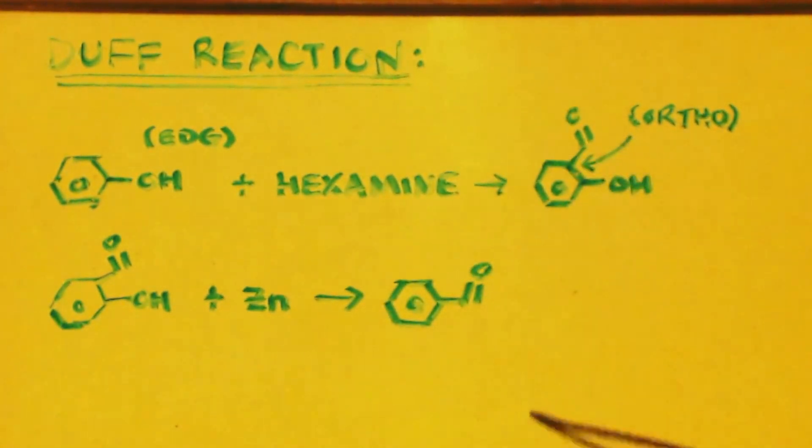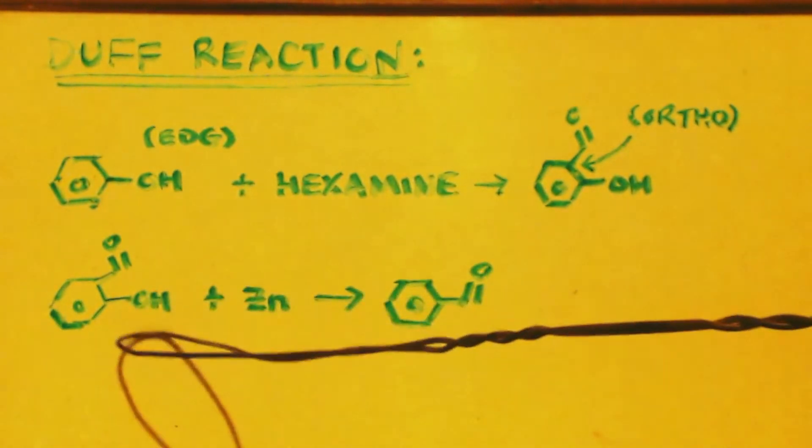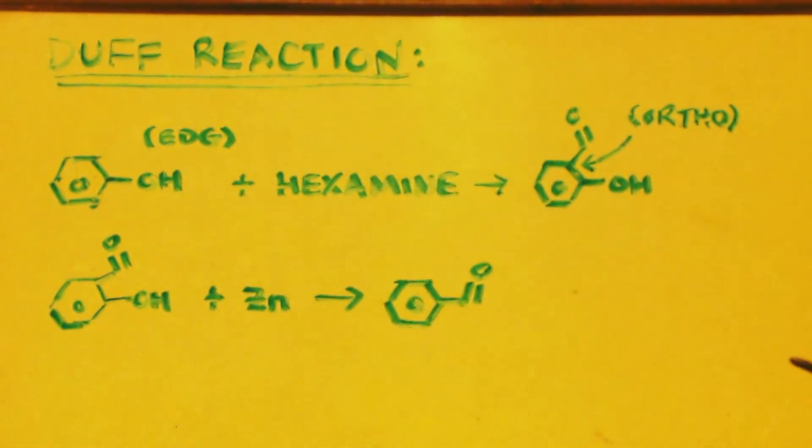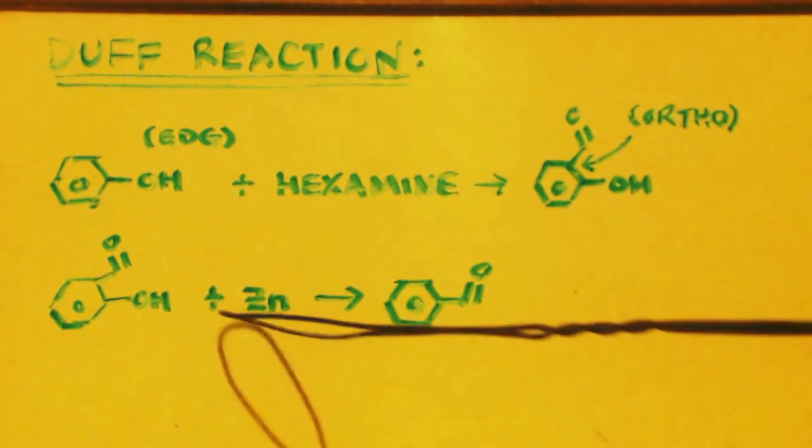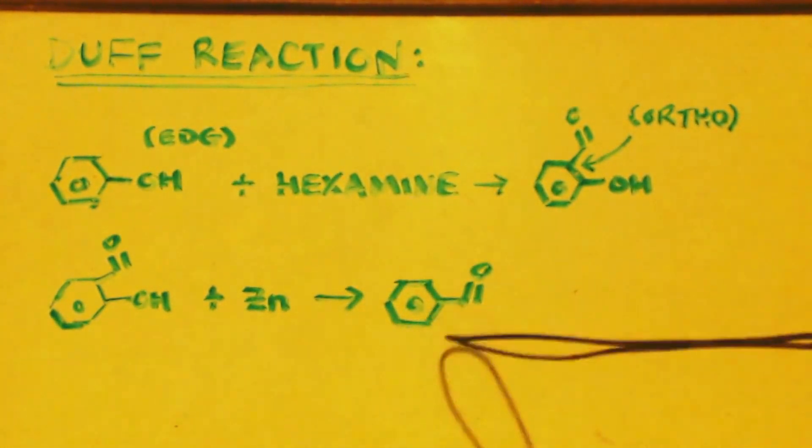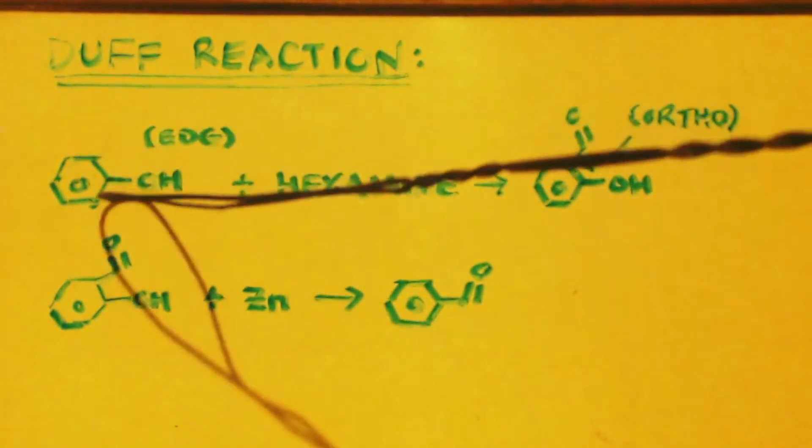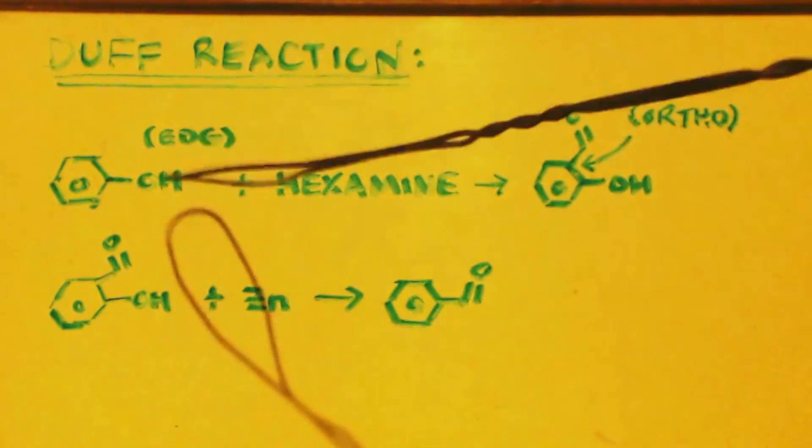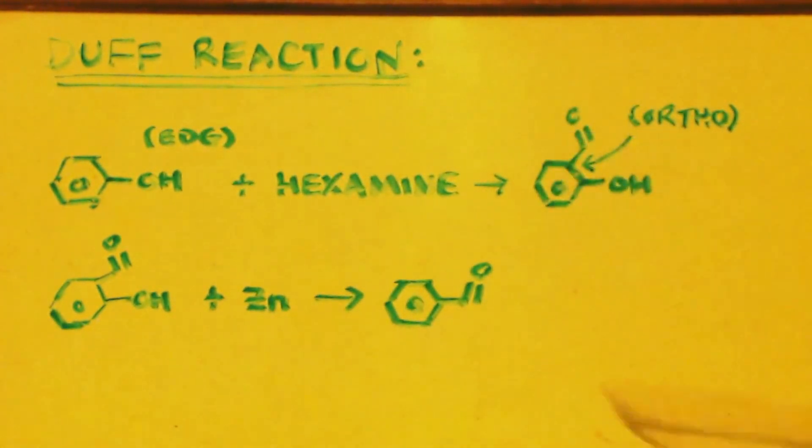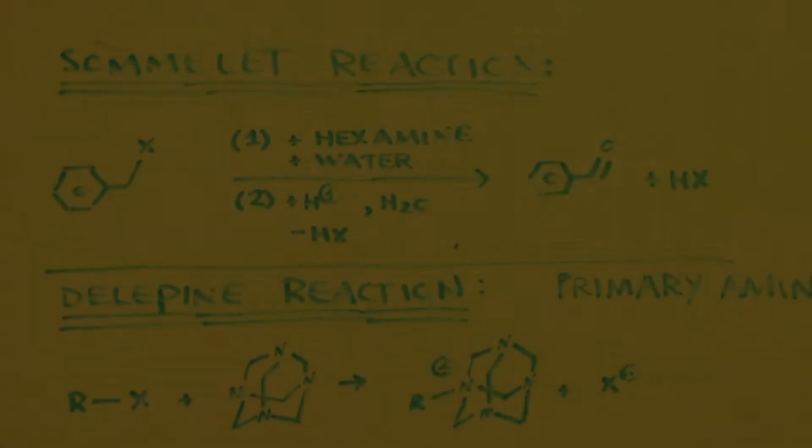So you mix that with hexamine and you're going to add your formyl group. It's going to go ortho to your electron donating group. And if those two ortho positions are filled, then it will add to the para position. Now you can take the product that you made, your benzaldehyde derivative, put it with some zinc dust and distill it. When you distill it, these two will react and benzaldehyde will come out.